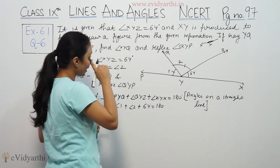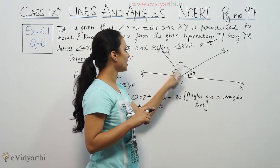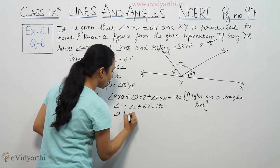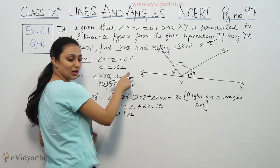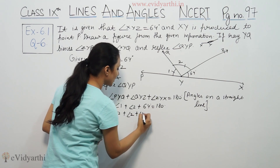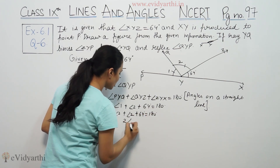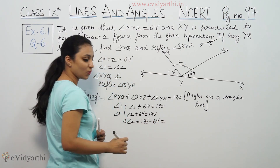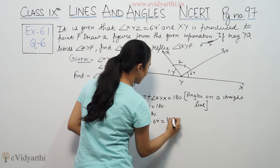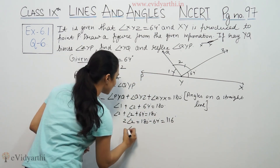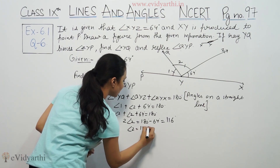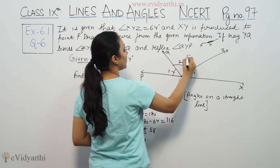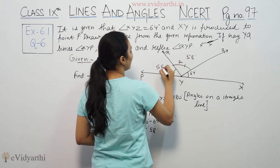Since angle 1 equals angle 2, we get 2 times angle 2 plus 64 equals 180. So twice of angle 2 equals 180 minus 64, which is 116. Therefore angle 2 equals 58 degrees.